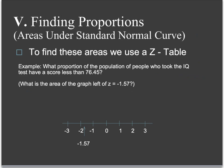And we use something called a z-table. Here's an example of a problem that you might have. You want to know what proportion of the population of people who took the IQ test have a score less than 76.45. If we have our standard normal curve, the mean on a standard normal curve is 0, and the standard deviation is 1. We want to know what is the area on the graph that's left of -1.57. Remember, -1.57 was the standardized z-score for 76.45.